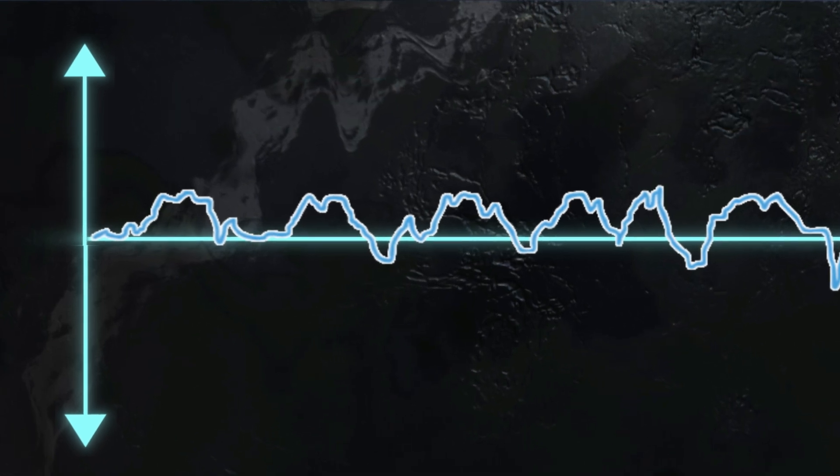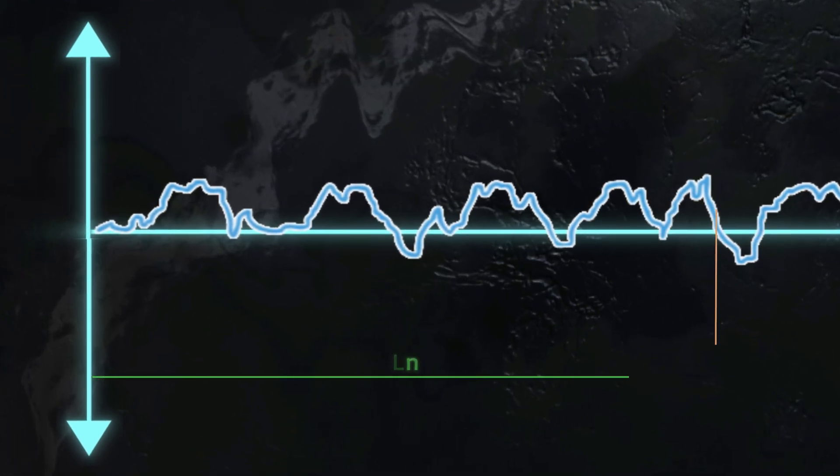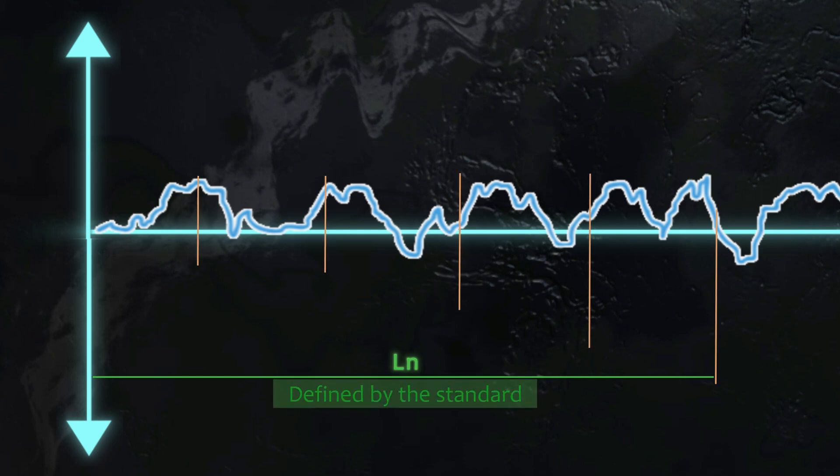Looking at the roughness profile, we have the total evaluation length, Ln, which is defined by the standard. This total length should be divided into five smaller single evaluation lengths, Lr. Now we are all set to look at the most important roughness parameters.